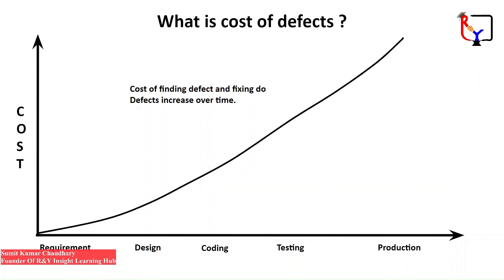Similarly, when a defect or bug is found in the design, then the design can be corrected and reused. But if the bug is not caught in the specifications and is not found until user acceptance, then the cost to fix those defects will be very expensive. If a bug is found in the requirement stage, it is relatively cheap to fix. If found in the design stage, the design can be adjusted and reused at little cost.